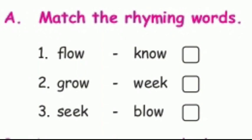When you read the poem itself you can understand it was rhyming. The rhyming words are: flow — blow, grow, seek — weak. Words with the same ending sound are rhyming words.